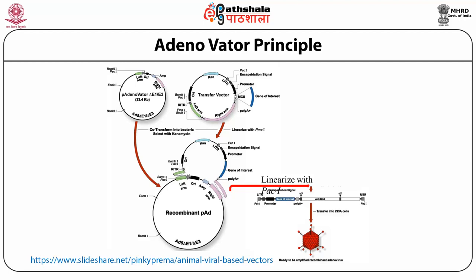Co-transfection into bacteria is performed, and selection is done using kanamycin. The finally constructed vector is tested in the laboratory. The recombinant adenovirus vector can be used for production of different gene products, or it can be linearized, and in that linearized form, the gene of interest can be introduced. Finally, the viral vector can be grown in animal cell lines.